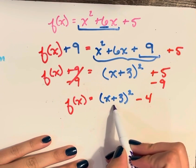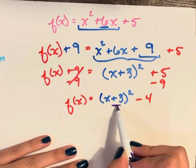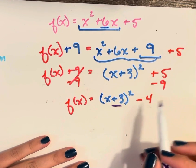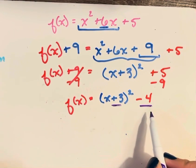So the vertex comes from the number inside the parentheses that's being added or subtracted from x and then the number added or subtracted outside.